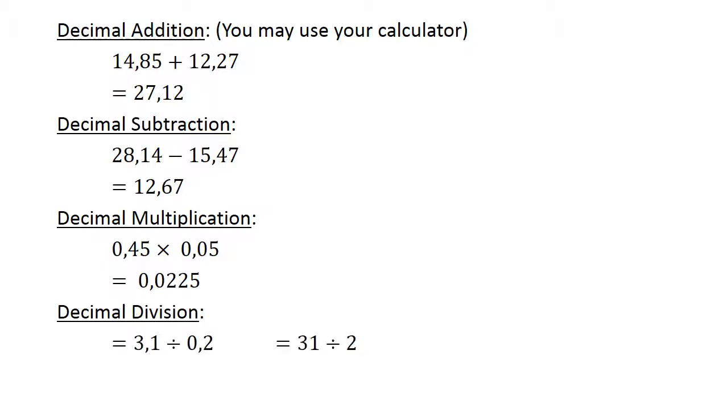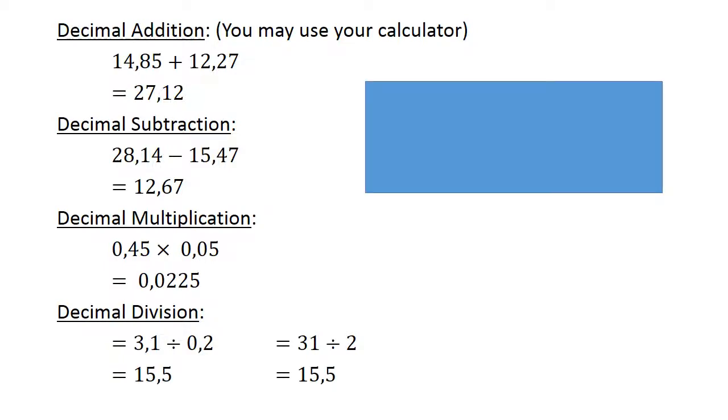Decimal division: 3.1 divided by 0.2. Multiply both by 10 to get whole numbers: 31 divided by 2 equals 15.5.